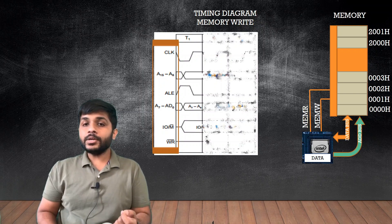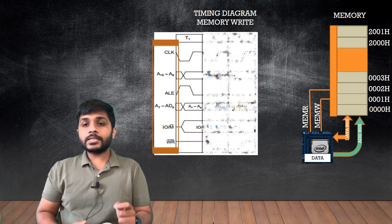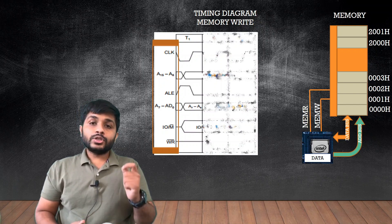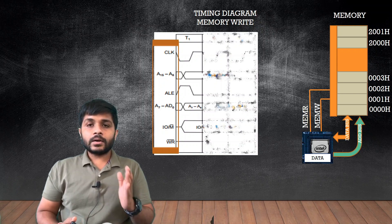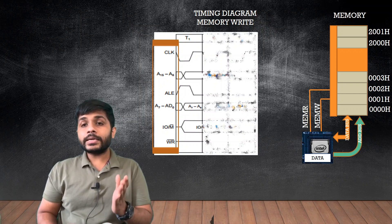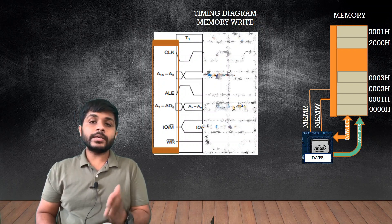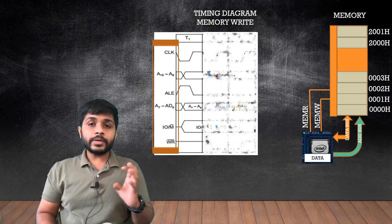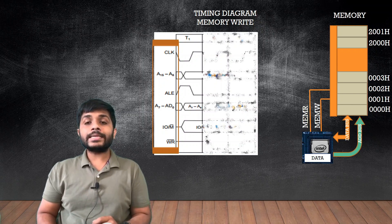Then there is ALE, which is Address Latch Enable. Then there is AD0 to AD7, which is a multiplexed bus. To use AD0 to AD7 as A0 to A7 we use Address Latch Enable. The AD0 to AD7 bus can be used either as A0 to A7 — the lower-order address bus — or as D0 to D7 the data bus. To differentiate between these two uses, we use the ALE signal.